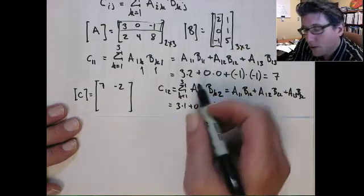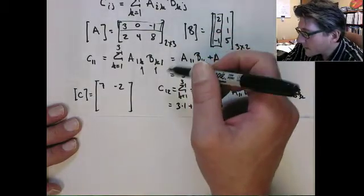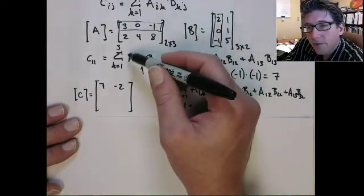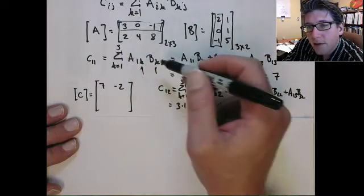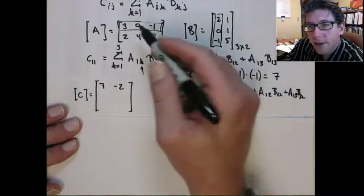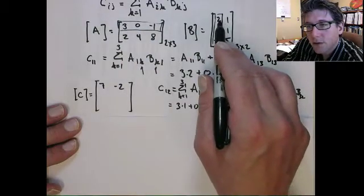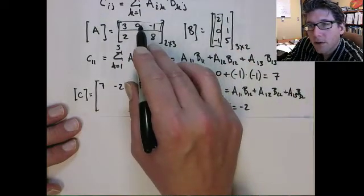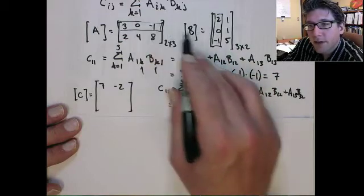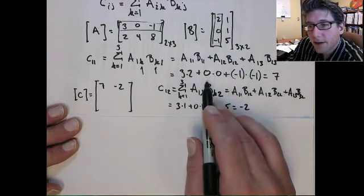And then if you look at this, that's exactly what's going on here. This is the multiplication of the first row of A with the first column of B. So we take 3 times 2 plus 0 times 0 plus minus 1 times minus 1. That's exactly what we had here.